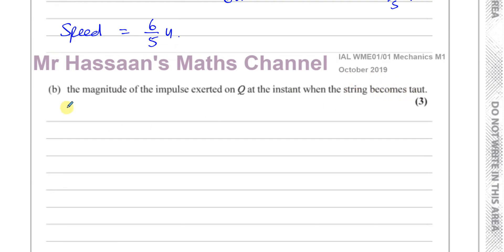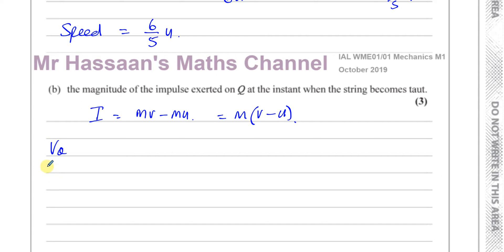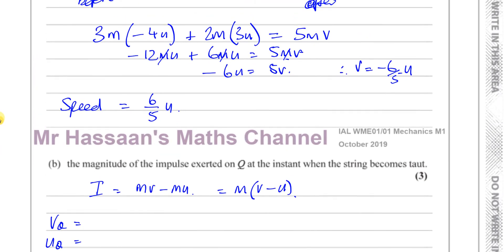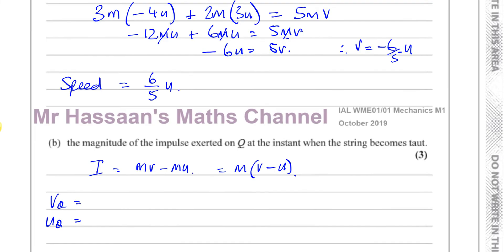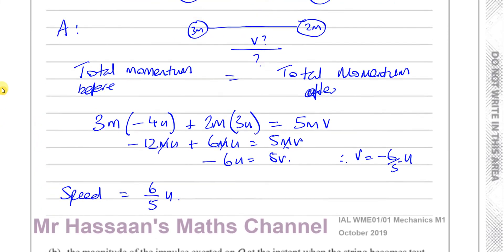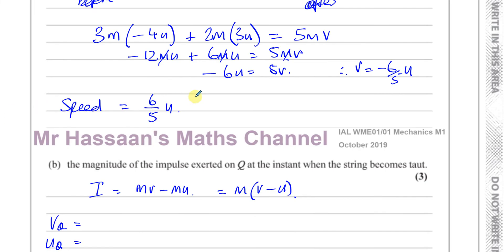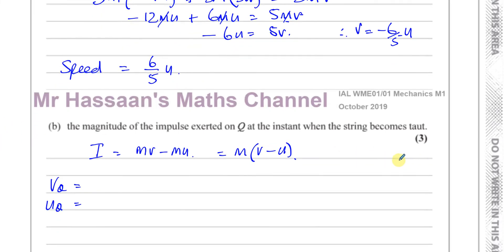So basically, the impulse is the change in momentum of an object. You can think of it as m times (v minus u). So if we find the final velocity of Q and the initial velocity of Q, we will be able to find the impulse exerted on Q. The final velocity of Q is the same as the common speed, which we've taken as negative 6/5 u.